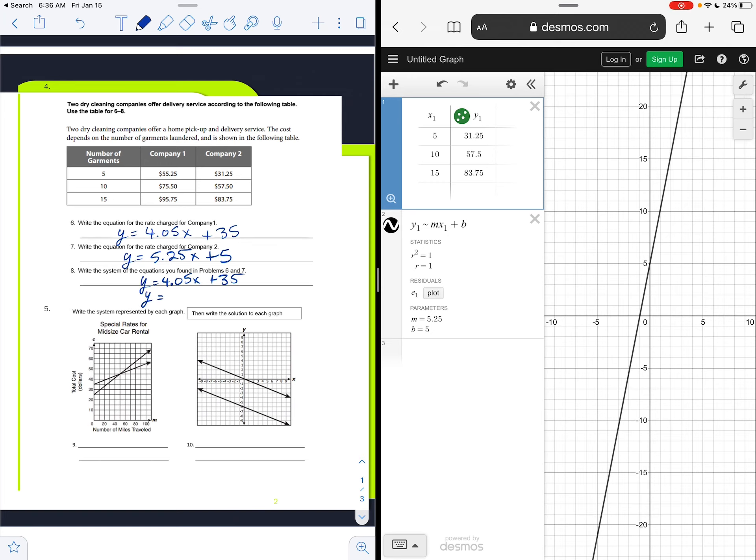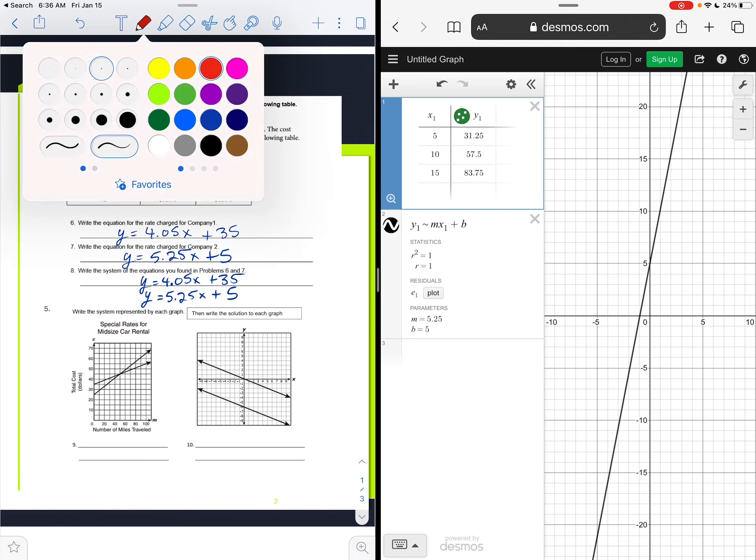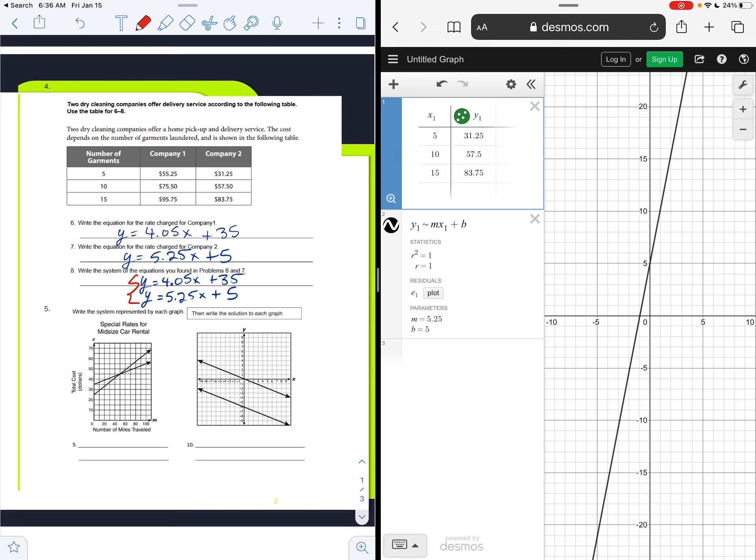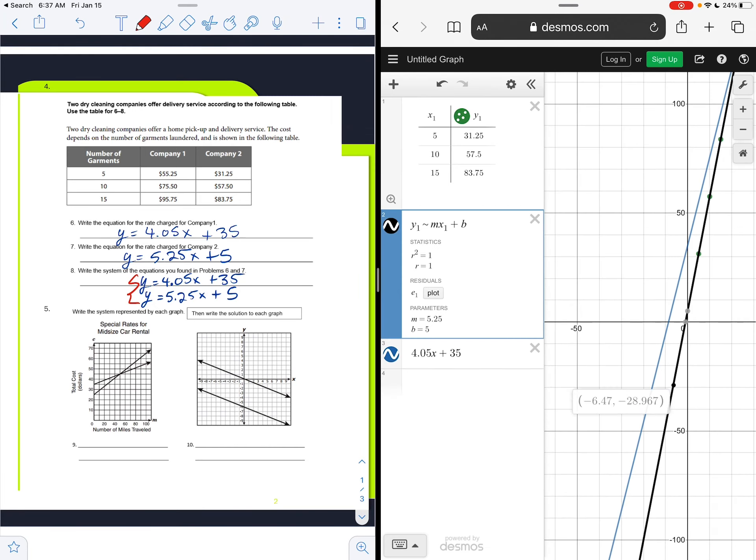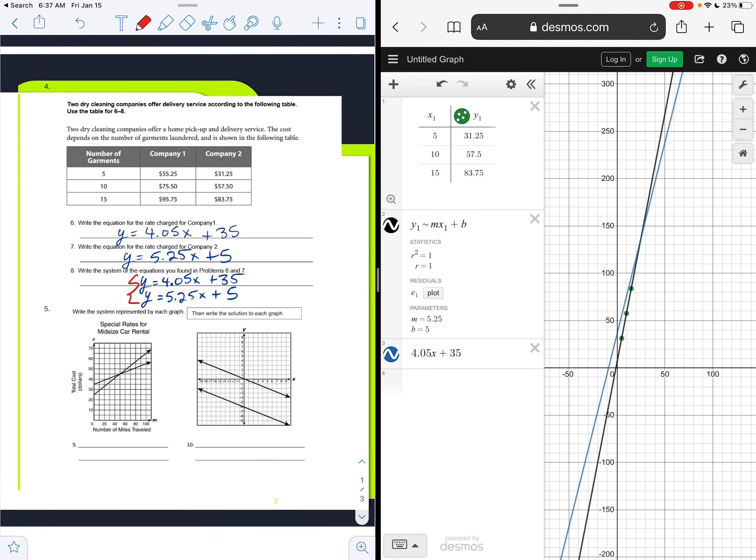Alright, and with that, now that's our system: y equals 4.05x plus 35 and y equals 5.25x plus 5. Here's our system, and of course if we want to solve it, we can. There's already the one we just created in there, so we could just do 4.05x plus 35. See, we're zooming out to find that point of intersection. We're going to tap where we think it is, and it gives us that the point of intersection is when we reach 25 garments. So at 25 garments, the price at each company is going to be $136.25.